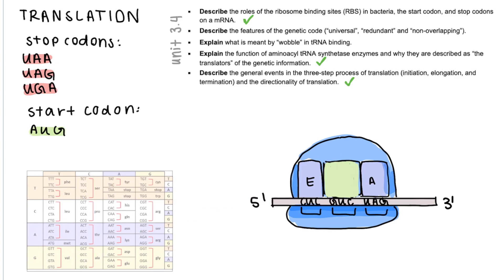So now if you look at our learning objectives we'll see that we already described the ribosome binding site in bacteria, what the start codon is, what the stop codon is, as well as the three steps in translation and tRNA synthetase enzymes.